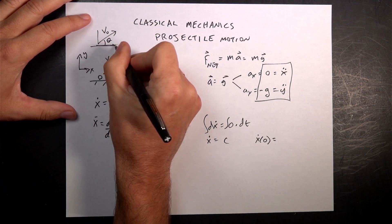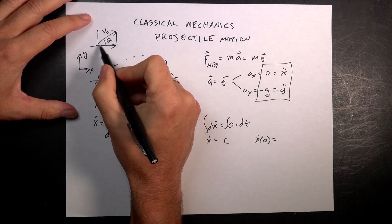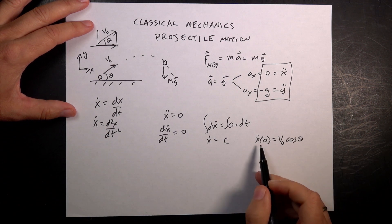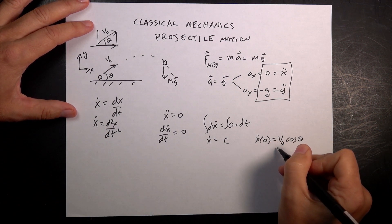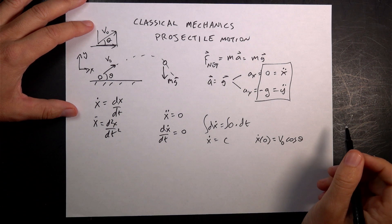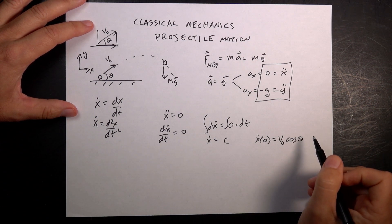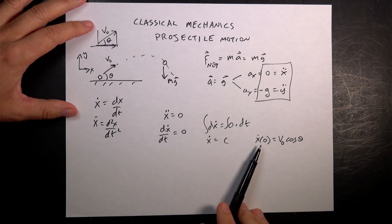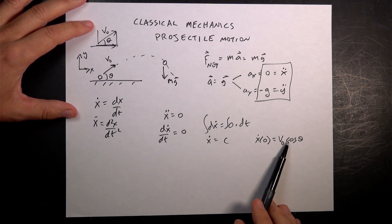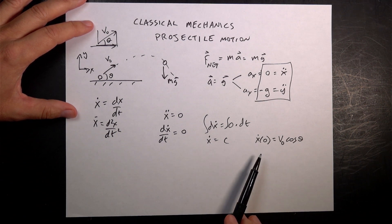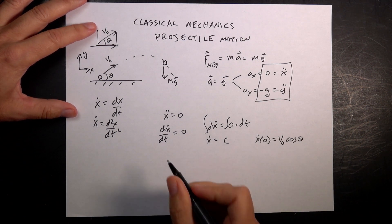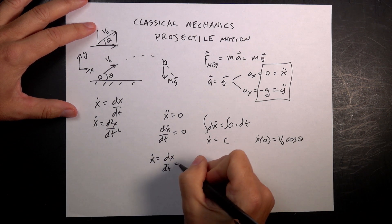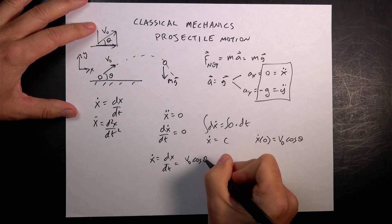This is the adjacent side, so this is v zero cosine theta. I could call that x dot zero, but I don't really care at this point. So now I have x dot as a function of time, which is that same constant — there's no t in there. So x dot equals dx dt equals v zero cosine theta.